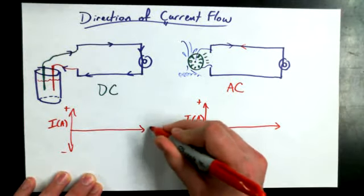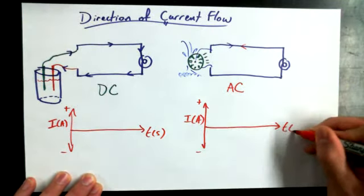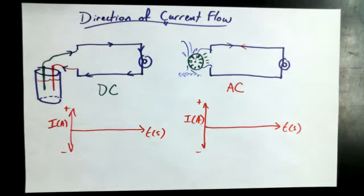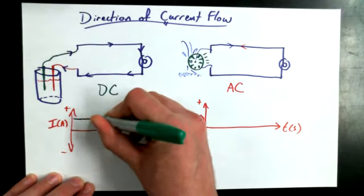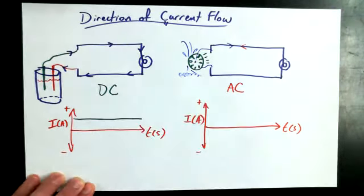And as time goes by, if you're in a direct current scenario, what should be true about the current? Should it always be going in the same direction, or should it change directions? Same direction. We're going to say it always has a positive current. And it's constant in magnitude.